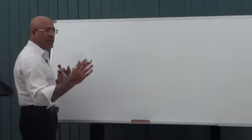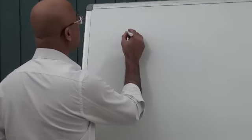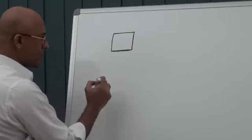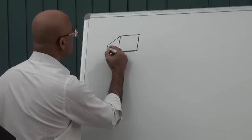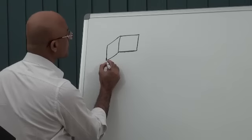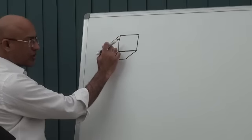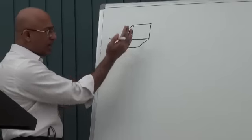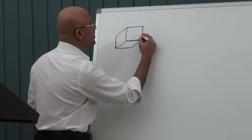I will draw the middle ear like a cube. Let's suppose this is the medial wall, here is the posterior wall, here is the floor of the middle ear. I have removed the lateral wall and partially removed the anterior wall, and I have also removed the membranous wall.